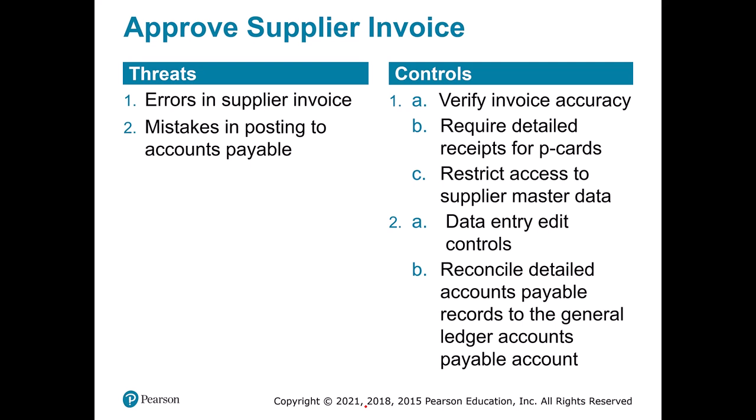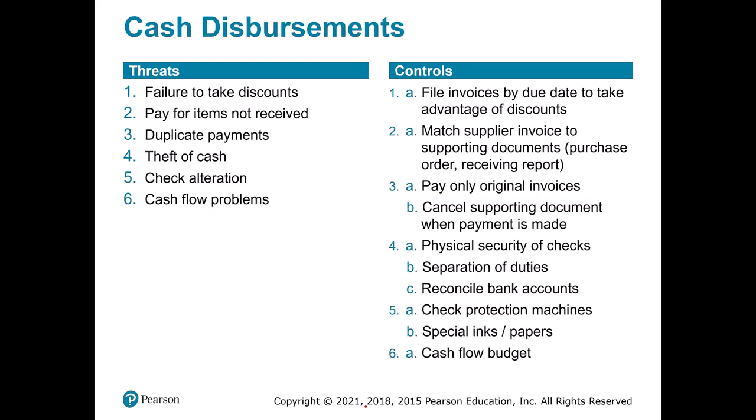This approval step has additional threats. Obviously errors can occur — a supplier may invoice for 100 items even though they only shipped 90 and only 89 were good. We also need to make sure there are no mistakes in posting so all transactions go to the right accounts. Controls include reconciliation and verification steps. For cash disbursements, we want to make sure we actually take discounts we planned for, avoid duplicate payments, prevent cash theft, and ensure no alterations happen on checks. All of this ties back to cash flow — knowing where our cash is and ensuring we're receiving and paying it out at the proper time.